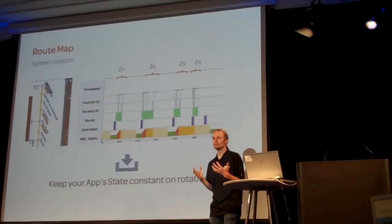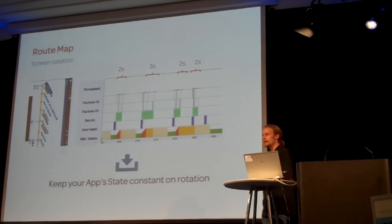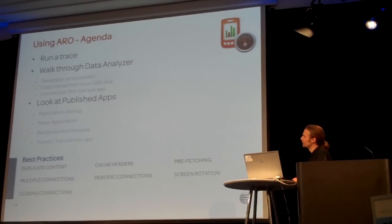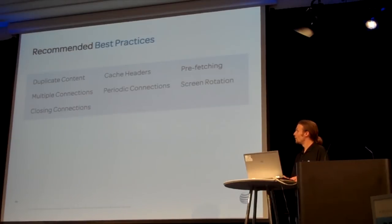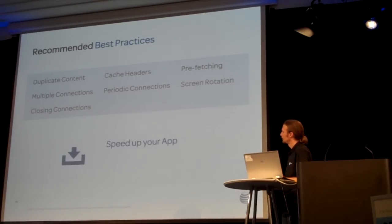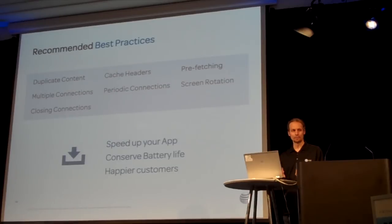Keep the state constant — don't rebuild state every single time you rotate. Build the app to handle rotation well, and avoid e-tags on mobile. Build for speed, make every connection count. Look in the cache for the file first — don't connect if you don't have to, to save power and speed up your app. Our best practices are: duplicate content, cache, screen patching, multiple connections, periodic connections, screen rotations, and closing connections. Follow these and you'll speed up your app, conserve battery life, and end up with happier customers who use your app more and stick with it.